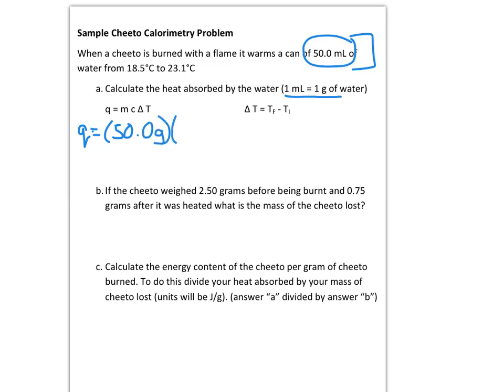For my C in this formula, I'm going to use the specific heat of water. The specific heat of water is always 4.184, and the units are joules per gram degrees Celsius. So I'm going to go ahead and write that in my problem.